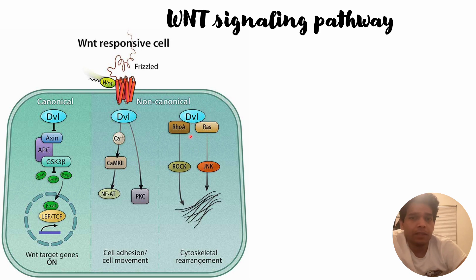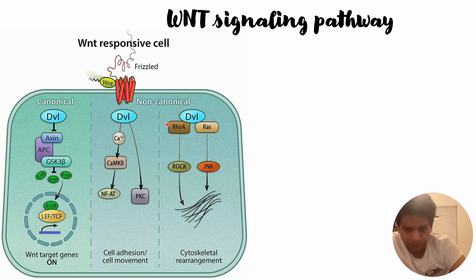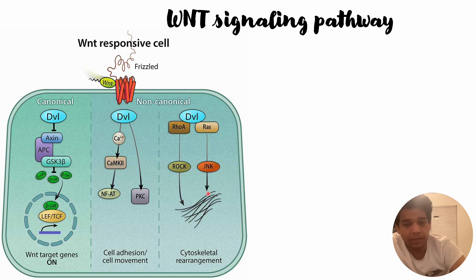For example, in the case of pancreatic cancer, KRAS protein mutations are highly found — around 90 percent of pancreatic cancer patients have KRAS mutations. So the downstream signaling of the non-canonical pathway is also triggered through RAS proteins and RhoA proteins, and finally they trigger the JNK signaling pathway.